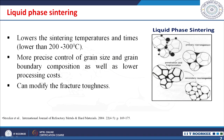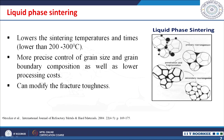Liquid phase sintering is very beneficial because it lowers the sintering temperature and the time required for sintering—by around 200 to 300°C compared to conventional solid state sintering. It also provides more precise grain size control and grain boundary composition control, affects processing cost, and results in microstructures that yield improved fracture toughness. Liquid phase sintering is therefore generally used for sintering of silicon carbide ceramics.